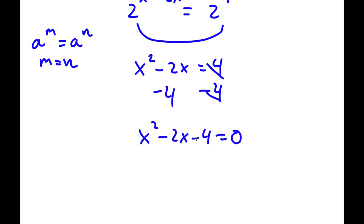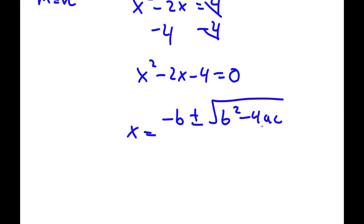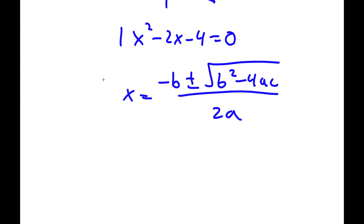And now, as you can see, I have a quadratic equation. And to solve this, I'm going to be using the quadratic formula: negative b plus or minus the square root of b squared minus 4ac, all over 2a. Now in this case, a is equal to 1, b is equal to negative 2, and c is equal to negative 4.